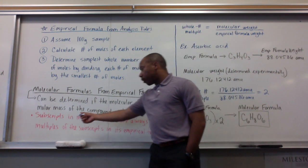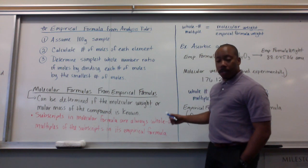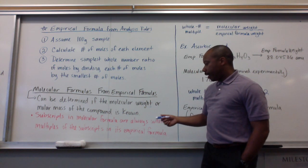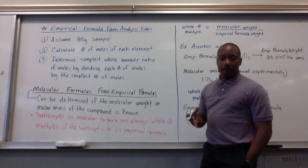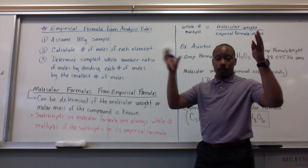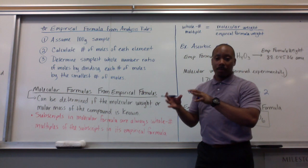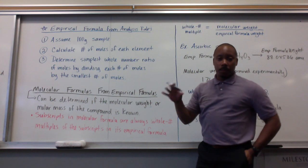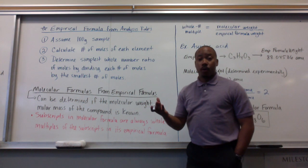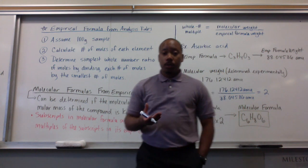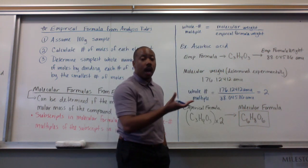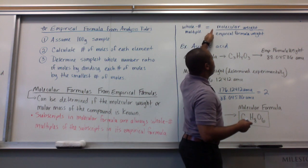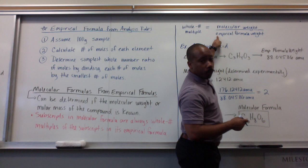Now, the subscripts in the molecular formula are always going to be whole number multiples of the subscripts in each empirical formula. And we've done that before in class. If I'm giving you the molecular formula and I say, what is the empirical formula of this molecular formula? You were easily able to reduce down to the simplest whole number ratios and give me the empirical formula. So, whole number multiples are determined by dividing the molecular weight by the empirical formula's weight.